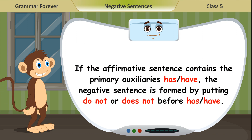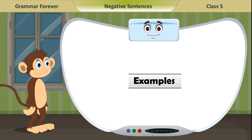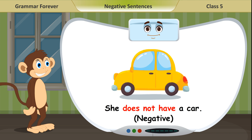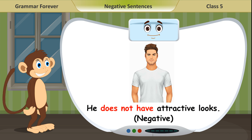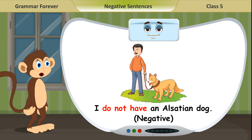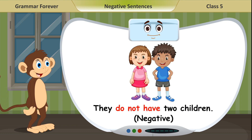If the affirmative sentence contains the primary auxiliaries 'has' or 'have', the negative sentence is formed by putting 'do not' or 'does not' before has or have. Examples: 1. She has a car (affirmative). She does not have a car (negative). 2. He has attractive looks (affirmative). He does not have attractive looks (negative). 3. I have an Alsatian dog (affirmative). I do not have an Alsatian dog (negative). 4. They have two children (affirmative). They do not have two children (negative).